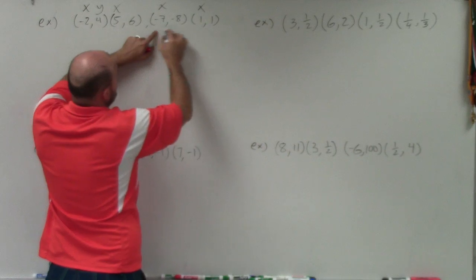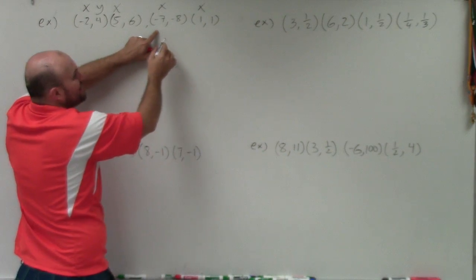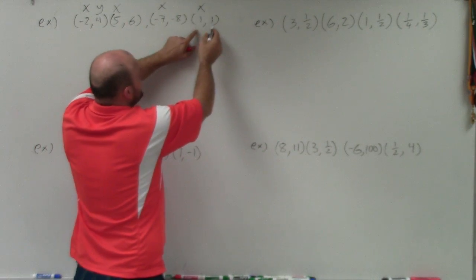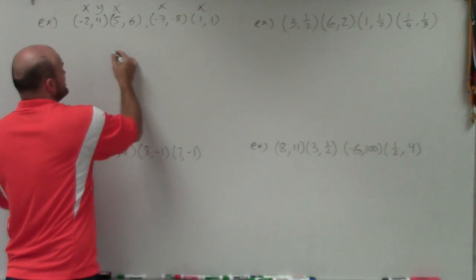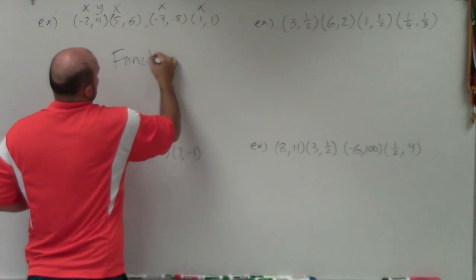Negative 7 goes to 8. That's the only representation of negative 7 going anywhere. And 1 goes to 1. OK? So no other way do we contradict this. So therefore, this is a function.